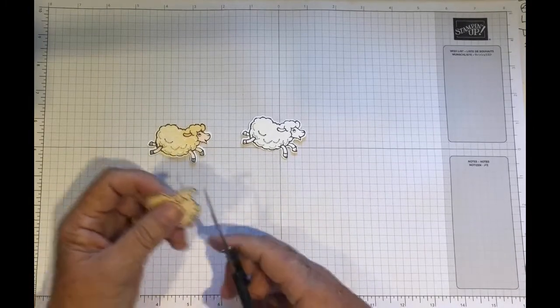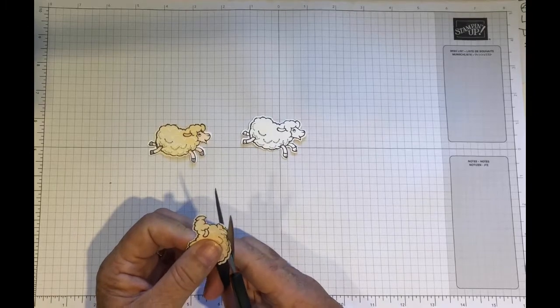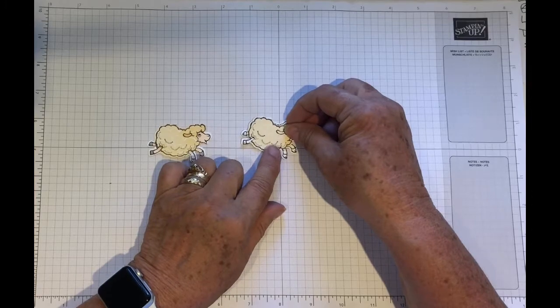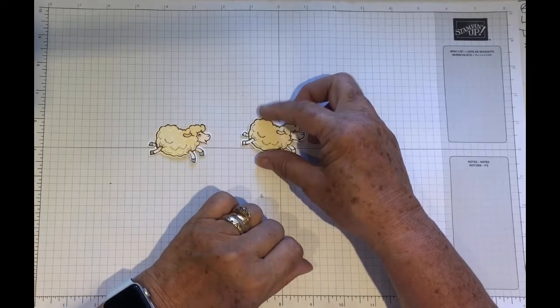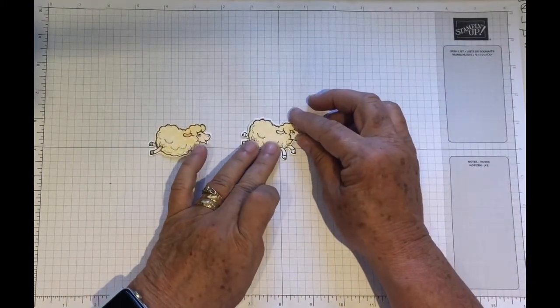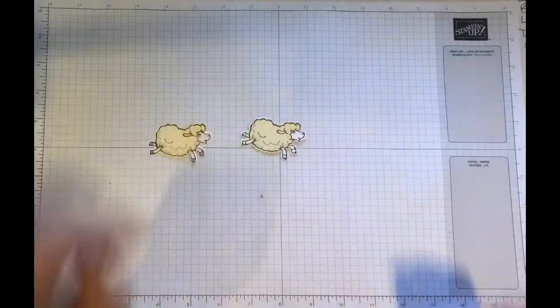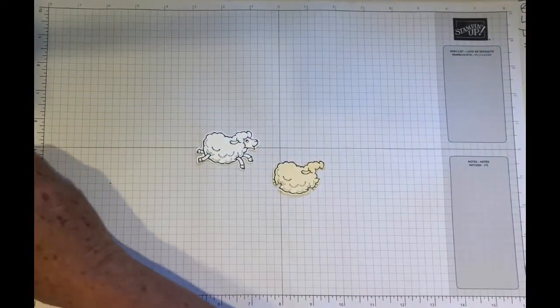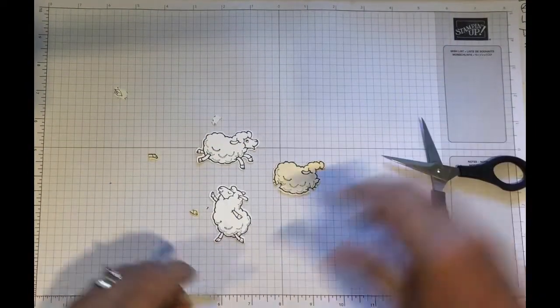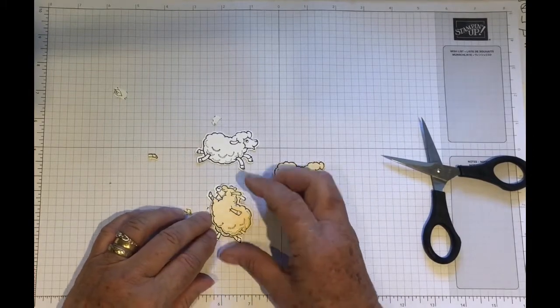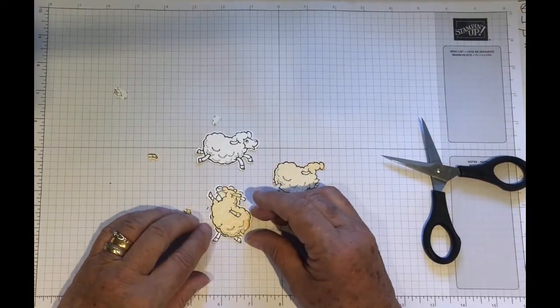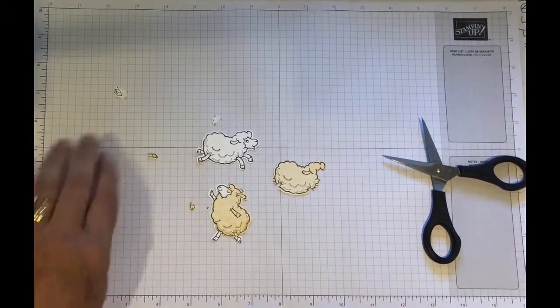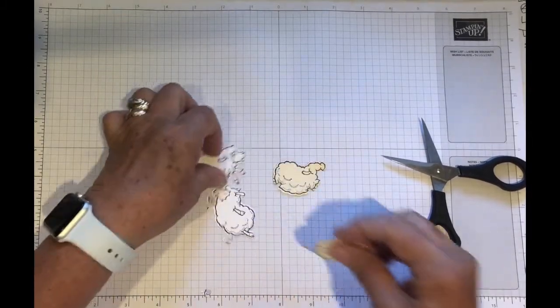And as you can see, we now need to cut this leg out as well. And you'll see me move the paper rather than the scissors. Just snip that off there. And as you can see, it fits in perfectly. It's like his pajamas. There we are.